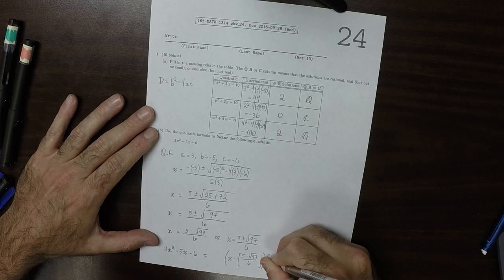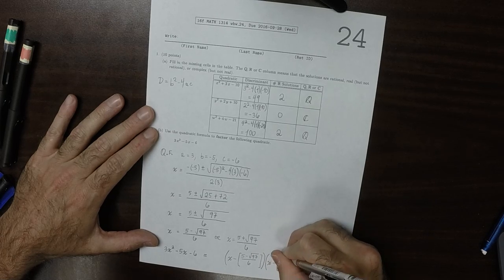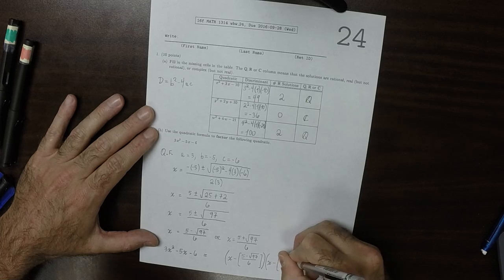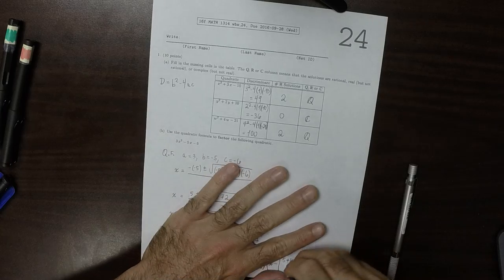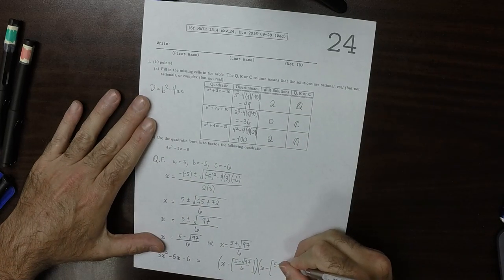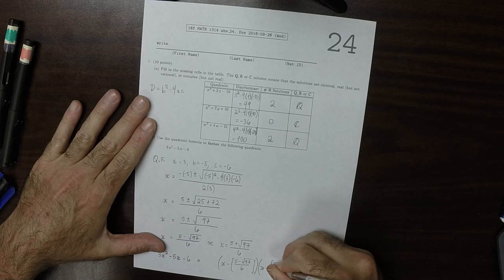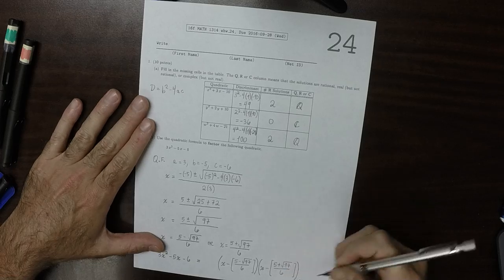The other factor must be x minus the other zero. It's 5 plus square root of 97 over 6, like so.